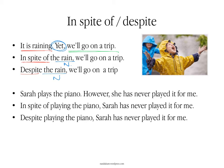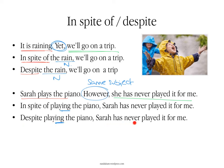Another possibility: Sarah plays the piano; however, she has never played it for me. This is the situation, and this is the surprising contrasting result. Because Sarah is the same subject in both sentences, you can use 'in spite of' or 'despite' followed by the verb in the -ing. You understand it's the same person even without mentioning the subject. So you could say: in spite of playing the piano, Sarah has never played it for me. Or: despite playing the piano, Sarah has never played it for me.